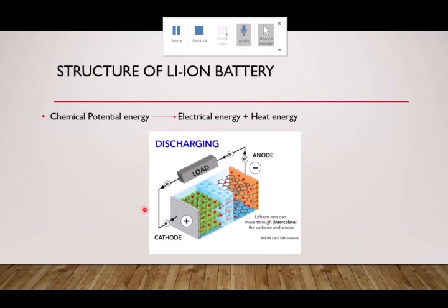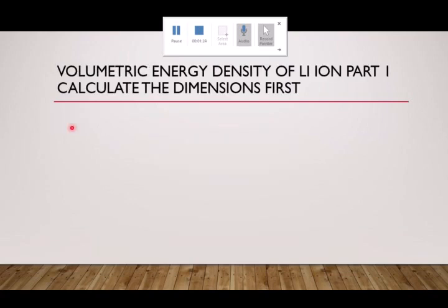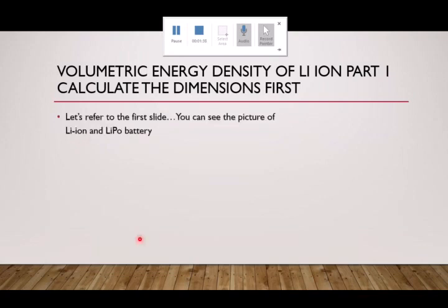You can see that the electrons move from the negative to the positive terminal, and those are your Li ions. Let's calculate the volumetric energy density — that is, how much power can it generate per one cubic meter, or one cubic centimeter of volume. Let's refer to the first slide.